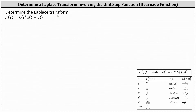We're asked to find the Laplace transform of the given function involving the unit step function, or Heaviside function. To find the Laplace transform, we'll be using the shifting property, which states the Laplace transform of f of the quantity t minus a, times u of the quantity t minus a, equals e to the power of negative a s times the Laplace transform of f of t.